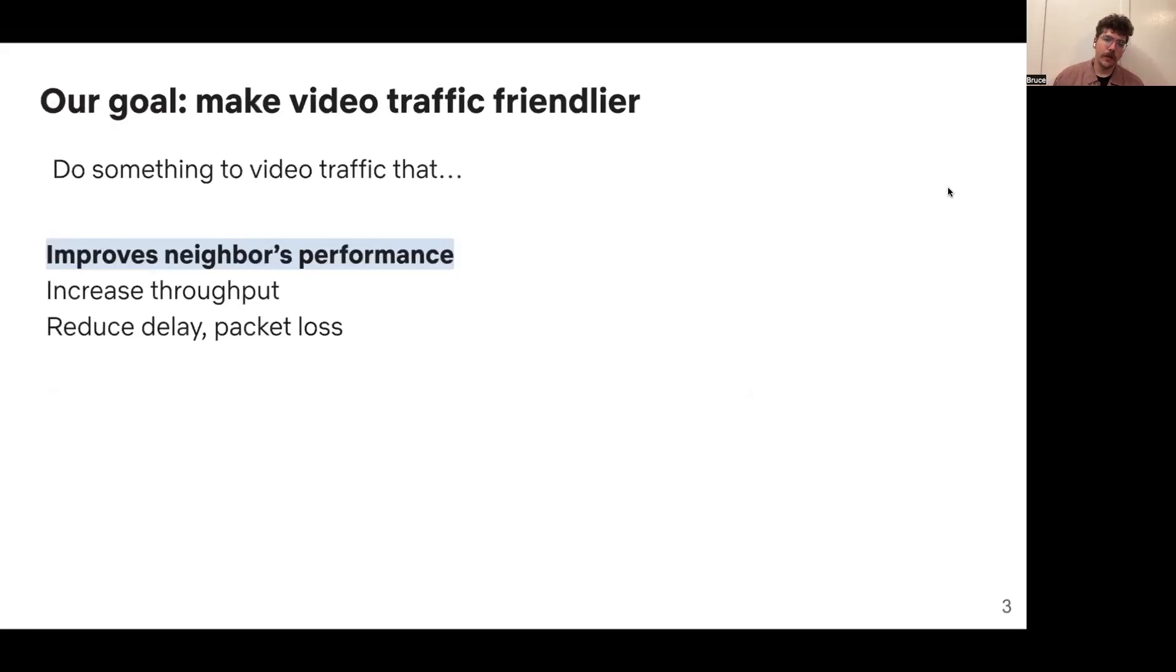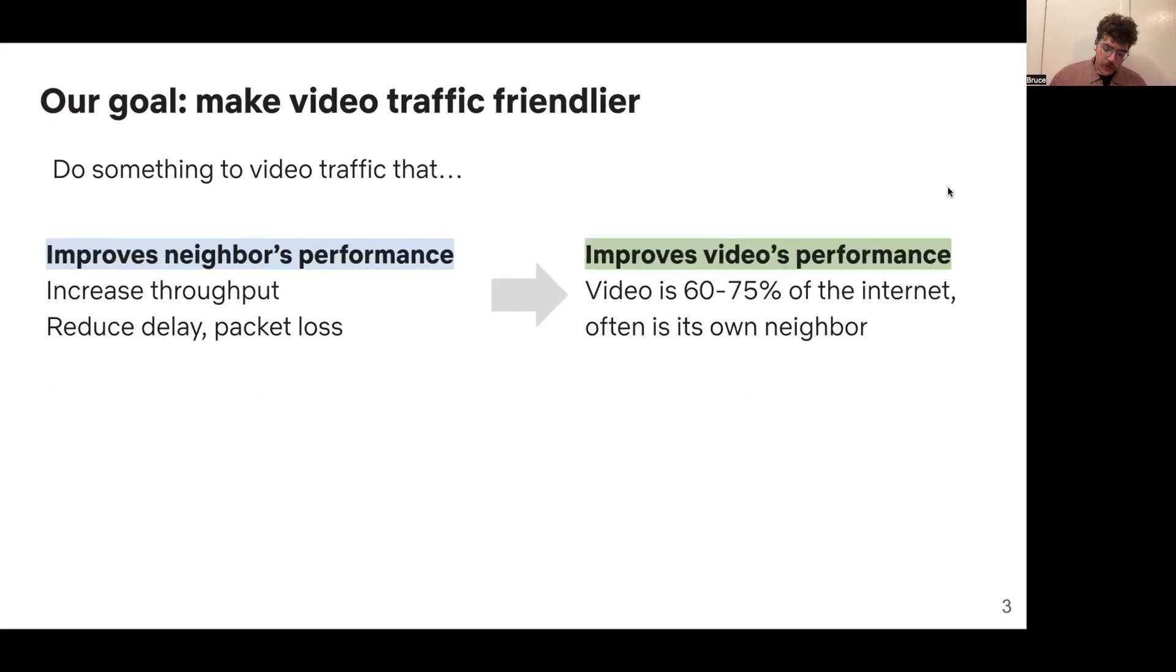Our goal in this paper is to make video traffic friendlier, to do something to video traffic that will improve the performance of neighboring applications that are sharing the same networks, maybe by increasing their throughput, reducing their queuing delay, or their packet loss. One of the reasons that Netflix is interested in this research is if we can do this, we can also improve their performance for video itself. Because video is such a large fraction of the internet, there are probably many places on the internet where it's sharing networks with itself.